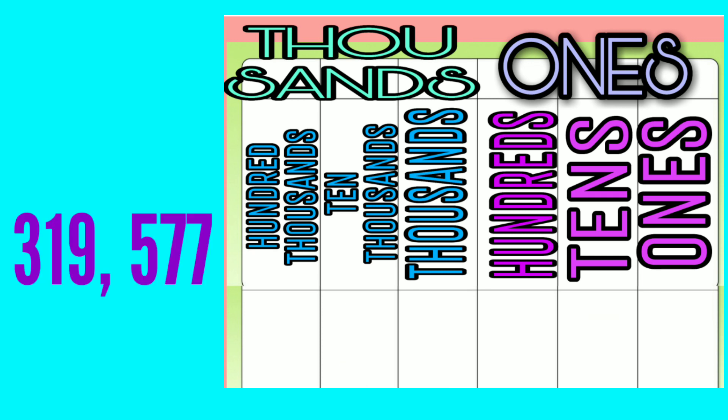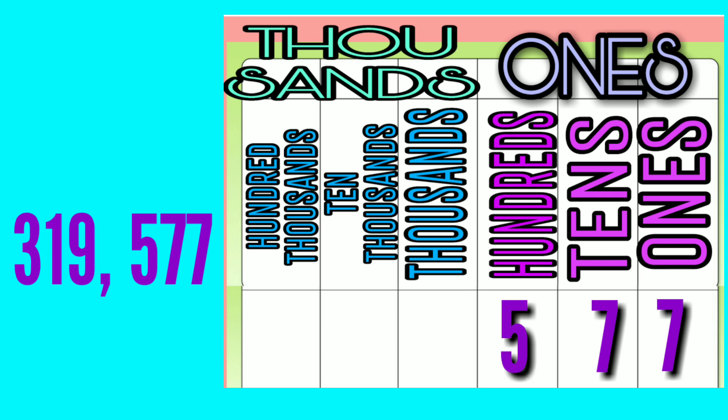Next, let's have three hundred nineteen thousand, five hundred seventy-seven. From the right, seven is the ones place, the next seven is the tens place, five is the hundreds place, nine is the thousands place, one is the ten thousands place, and three is the hundred thousands place.